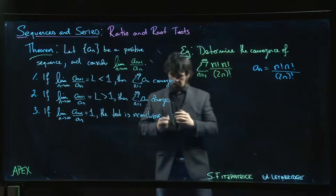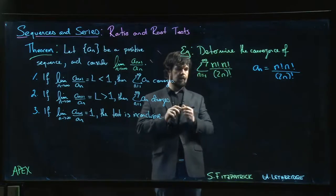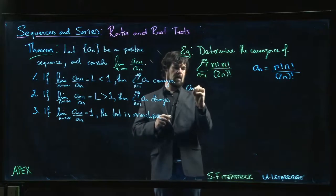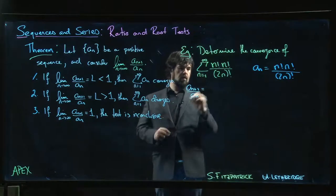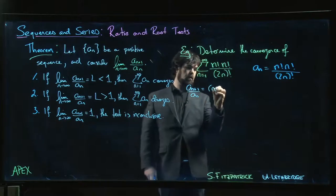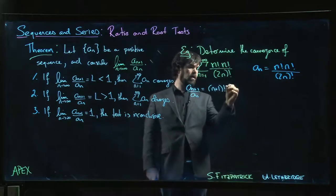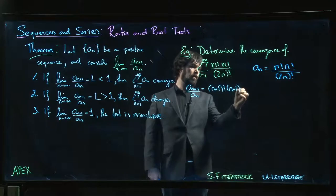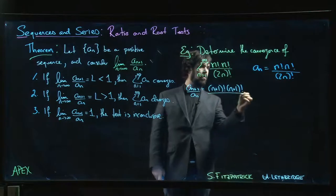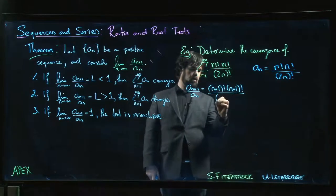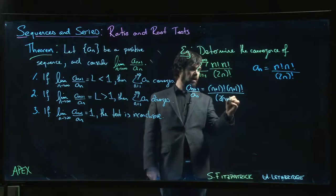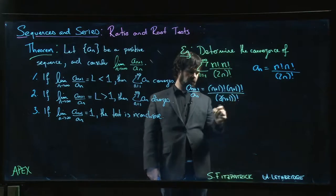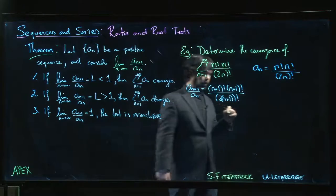What do we get when we do A_{n+1} over A_n? So we have n plus 1 factorial, n plus 1 factorial over 2... So do it this way: 2 times n plus 1 factorial. That's going to be 2n plus 2 factorial on the bottom.